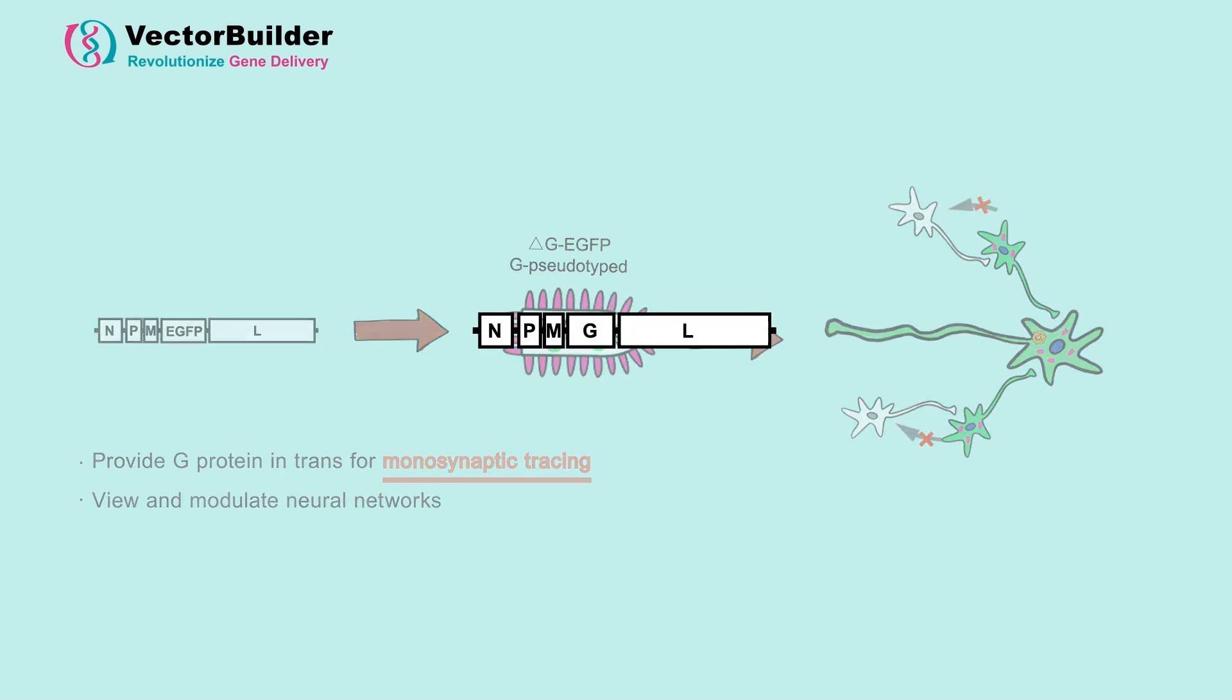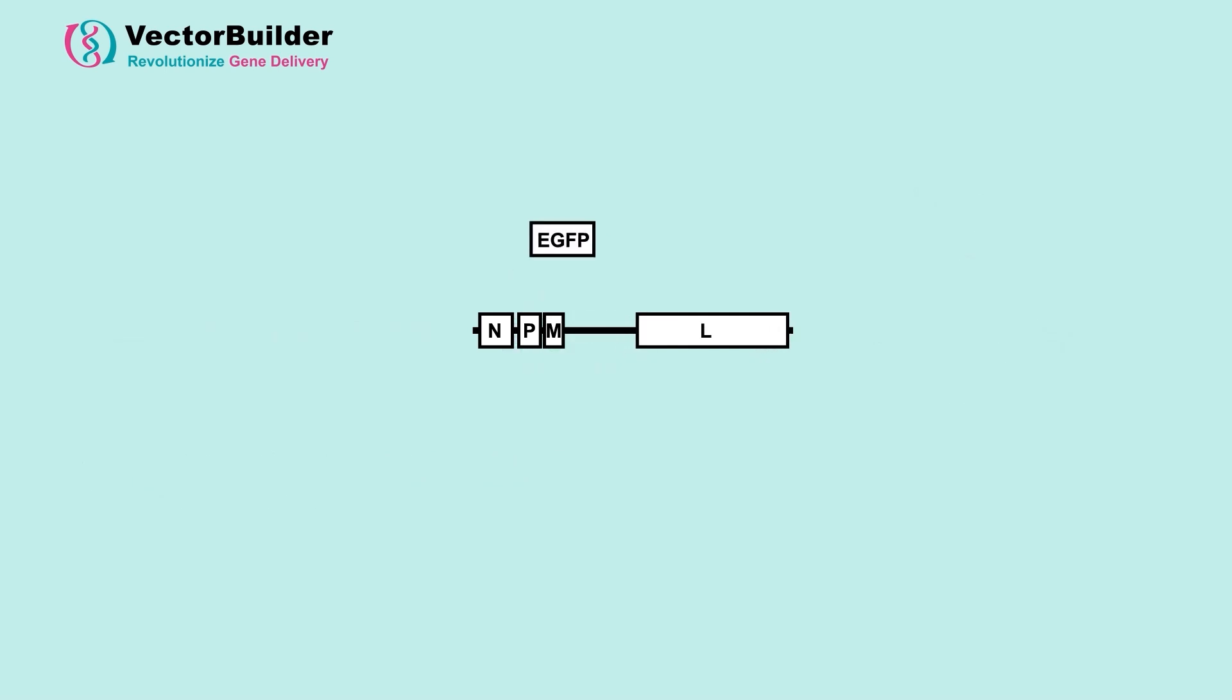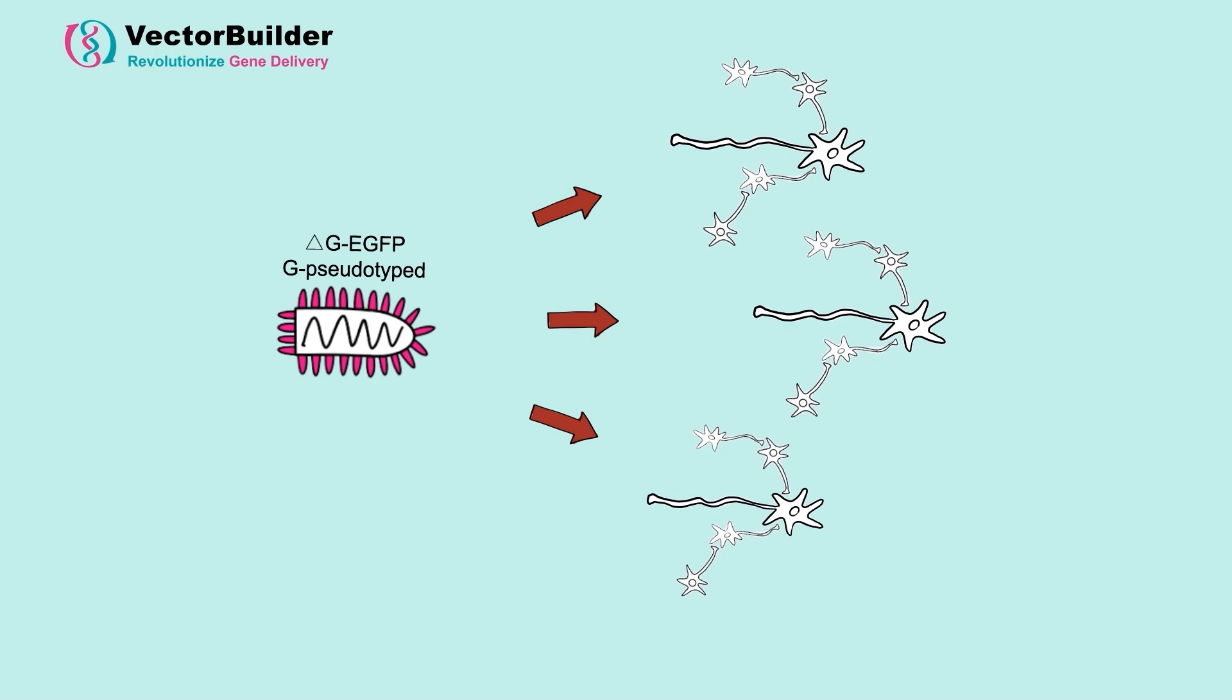The recombinant rabies virus where EGFP replaces the G protein ensures a consistent labeling of secondary neurons when the G protein is provided in trans.